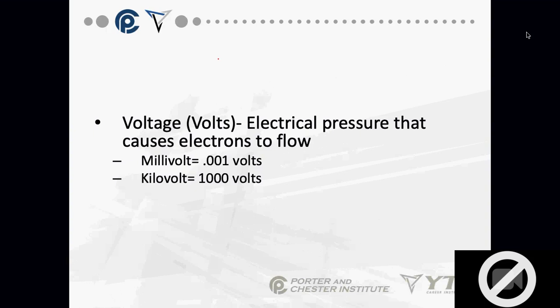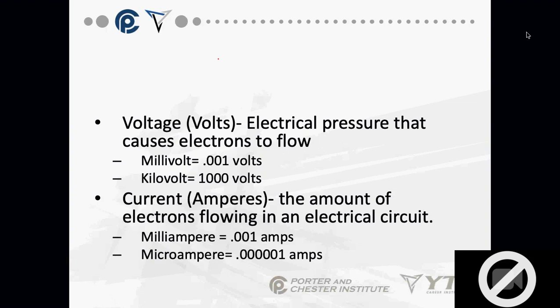Voltage is electrical pressure that causes electrons to flow, often referred to as electromotive force or EMF. A millivolt is 0.001 volts; a kilovolt is a thousand volts — not something we want to work with in this trade. Current is the amount of electrons flowing in an electrical circuit — the speed of electrons flowing. A milliamp is 0.001 amps; microamps goes down further.